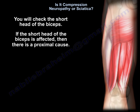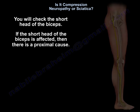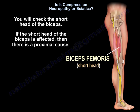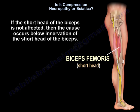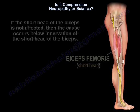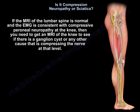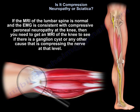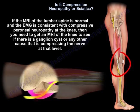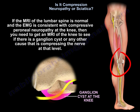You will check the short head of the biceps femoris on EMG. If the short head of the biceps is affected, then there is a proximal cause. If it is not affected, then the cause occurs below the innervation of the short head of the biceps. If the lumbar spine MRI is normal and the EMG is consistent with compressive peroneal neuropathy at the knee, then you need to get an MRI of the knee to see if there is a ganglion cyst or another cause compressing the nerve at that level.